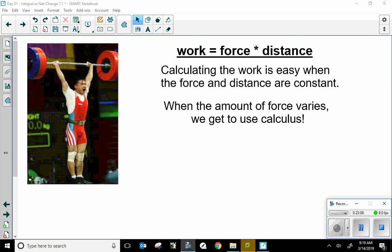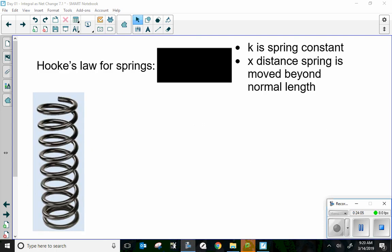Work. Work equals force times distance. It's a basic equation for physics. Calculating the work is easy when the force and distance are constants. If my force was 2 and my distance was 8, well, 2 times 8 is 16. When the amount of force varies, we get to use calculus. Now that we know what work is, let's apply that to an object.